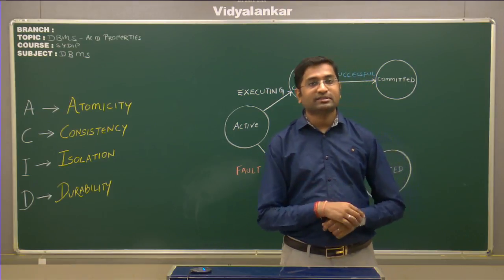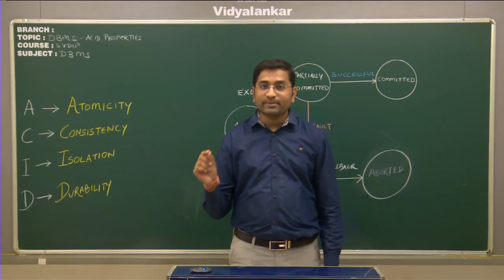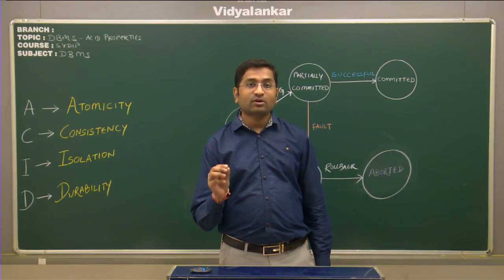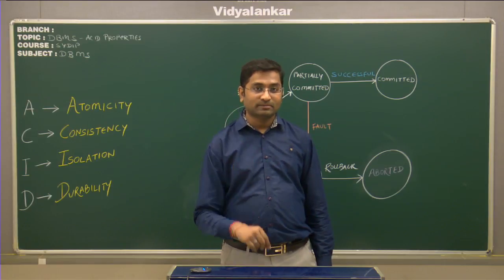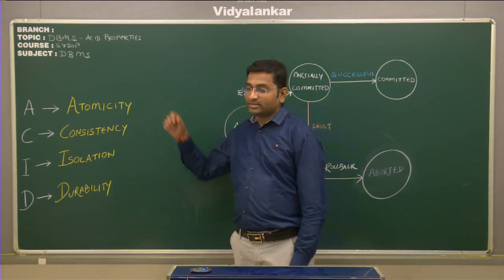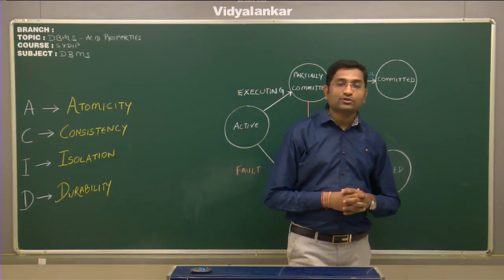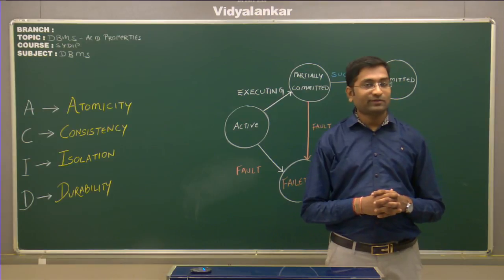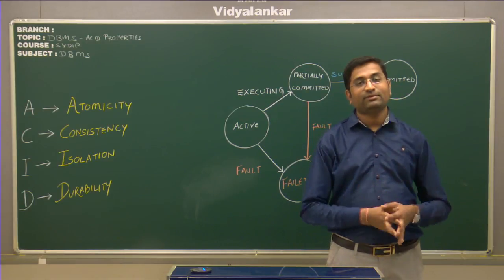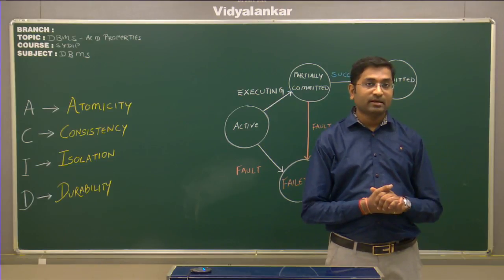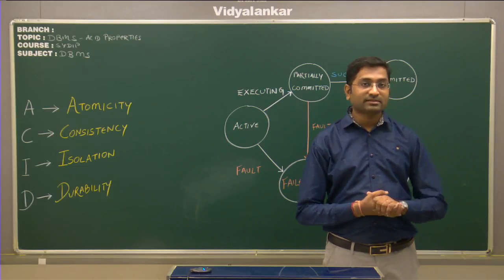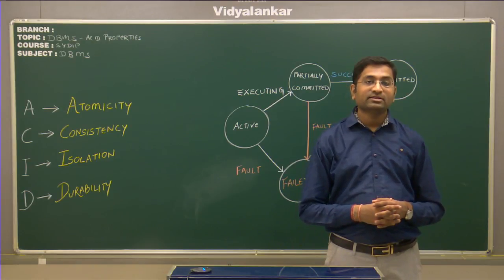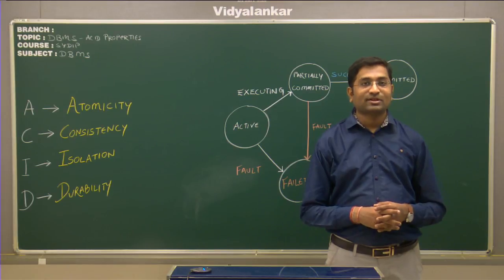The property which ensures that either the entire transaction completes successfully or the entire transaction is not allowed to complete at all is known as atomicity. Atomicity ensures that either all the sub-queries of the transaction will run successfully or none of them will run. If only half of them have run successfully and the remaining half have failed, then whichever queries ran successfully will be rolled back so that the database returns to the state it was in before the transaction began.